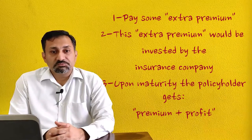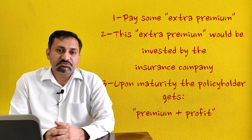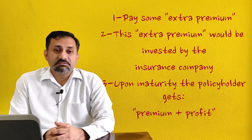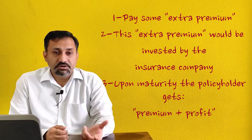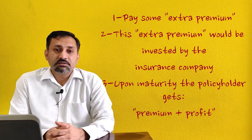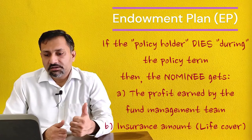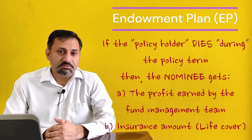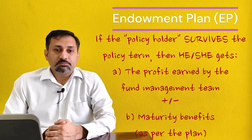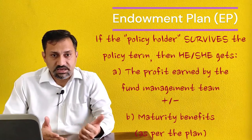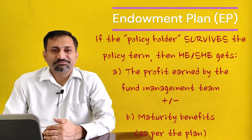But also some profits on the premium that he or she has been paying over the policy term, then we would have to facilitate the insurance company by giving some extra premium. This premium would then be invested by the fund management team of the insurance company, and the profits that the fund management team earns would be utilized to repay the premium plus give some extra profits to the policyholder. This type of plan is called the endowment plan. In an endowment plan, if a policyholder dies during the policy term, the nominee gets the insurance amount and the profits earned by the fund management team.